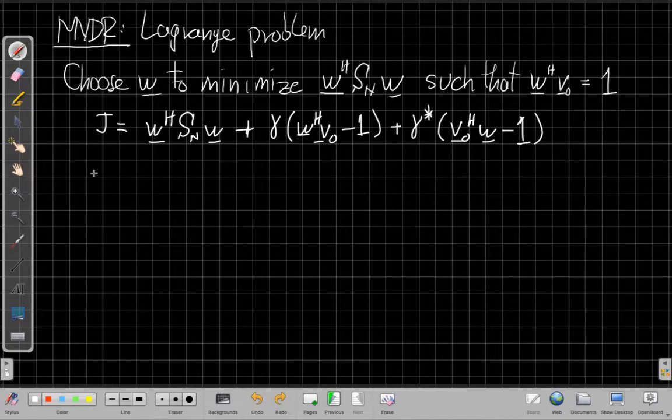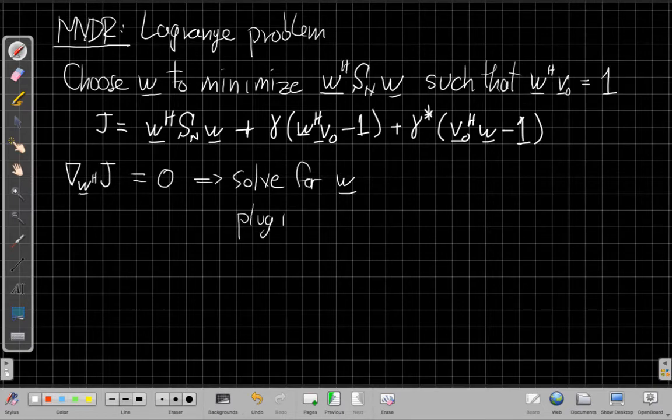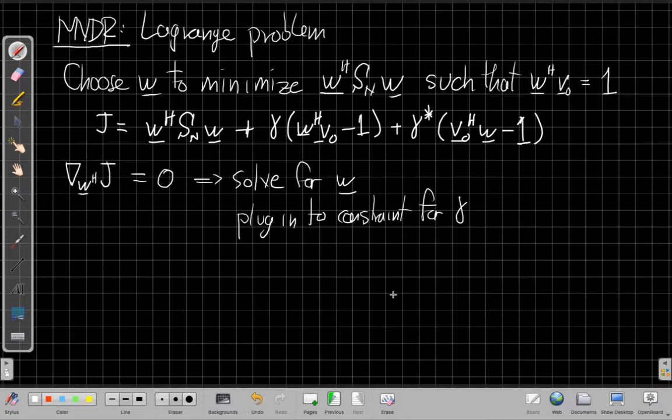So now my next step is to take the gradient with respect to, I'll do W Hermitian here. Again, I can do either one of J and set it equal to 0, and then, this is the same old story for Lagrange over and over again, and then solve for W. And once we've done that, we'll also need to plug in to the constraint equation to get gamma. So let's see how this plays out.